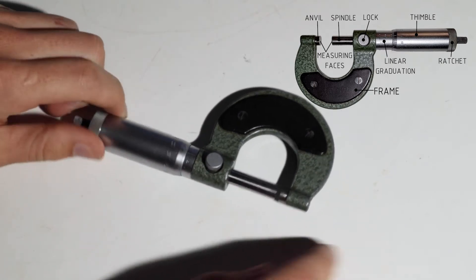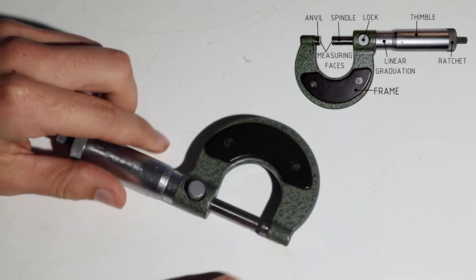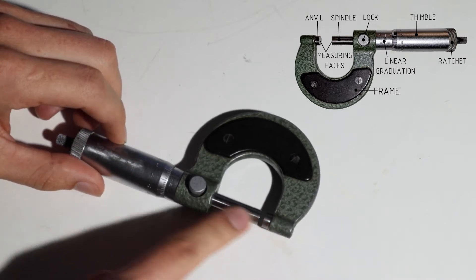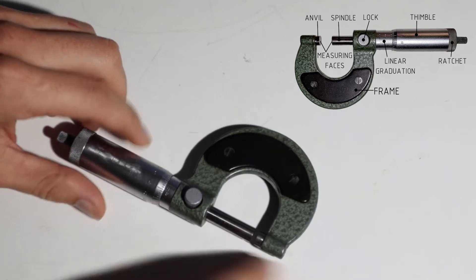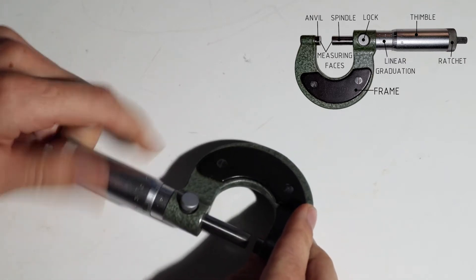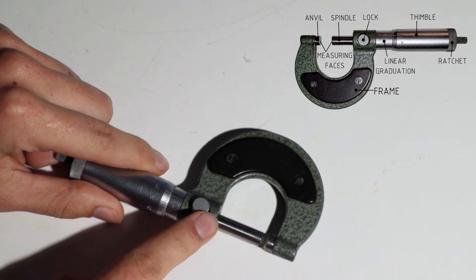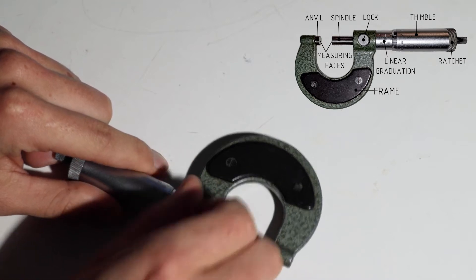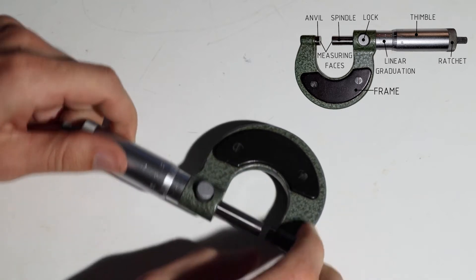Then we've got our anvil which is the static part here and our spindle which is this part that moves back and forth and here we can see a locking nut which is used to lock our dimension.